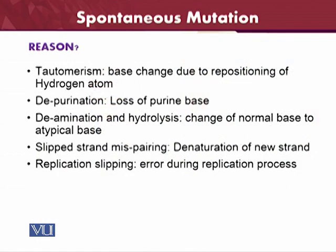There are different kinds of spontaneous mutations. Tautomerism is based on the positioning of the hydrogen atom — if the hydrogen atom of the base pairs is changed, it is called tautomerism. Then there is depurination, where a purine base is lost. Deamination involves the hydrolysis change of a normal base to an atypical base. Slipped strand mispairing involves denaturation of the new strand. Finally, replication slipping refers to an error occurring during the replication process.